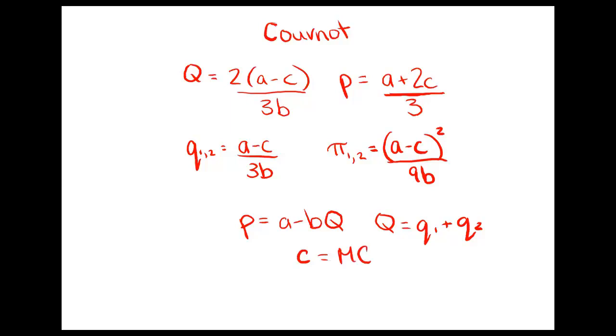Firm one believes firm two will sell quantity two and chooses its output quantity one. So we're looking for best response functions in order to get the Nash equilibrium quantity and price. We are going to show how this will end up being the market quantity Q = 2(a-c)/3b, the price p = (a+2c)/3, an individual firm's quantity q_i = (a-c)/3b, and individual profit π_i = (a-c)²/9b for each firm, and they're both the same.